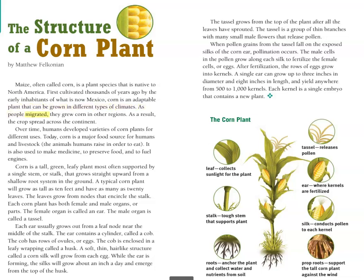As people migrated, they grew corn in other regions. As a result, the crop spread across the continent. Over time, humans developed varieties of corn plants for different uses. Today, corn is a major food source for humans and livestock, the animals humans raise in order to eat.